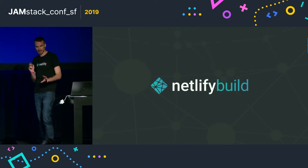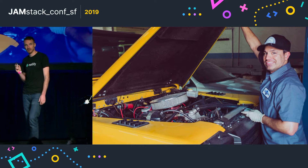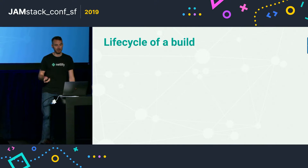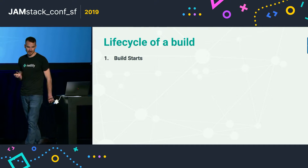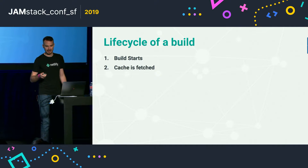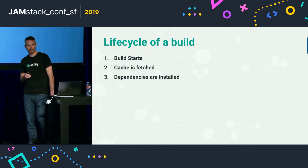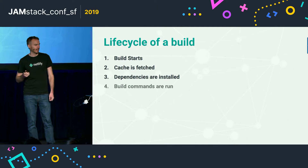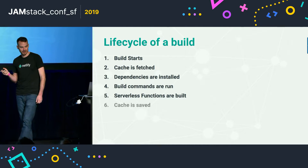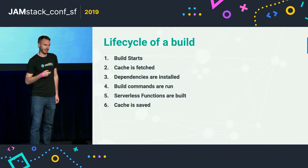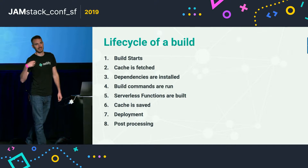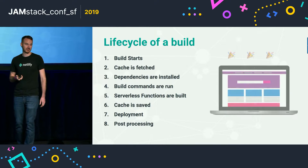Today we're going to talk about Netlify build and zoom in on that and look under the hood of how that actually works when you give us your build command. The lifecycle of a build starts when there's a commit or you push a button. The cache gets fetched to optimize from previous builds. Dependencies get installed — all of your npm packages and what have you. Your build command is then run. Serverless functions get built and deployed into AWS. The cache gets saved again to optimize future deployments and builds. The site gets deployed, and then we do post-processing optimization on your files — shrinking images, processing forms, et cetera.